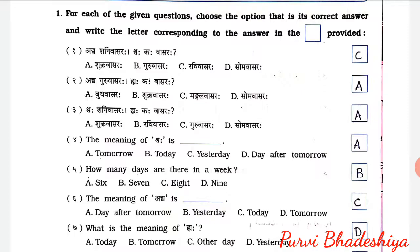1. Adhyah Shani Vasaraha. Swaha Kaha Vasaraha? Answer is C. Ravi Vasaraha. 2. Adhya Guru Vasaraha. Hiya Kaha Vasaraha? Answer is A. Budha Vasaraha. 3. Swaha Sani Vasaraha. Hiya Kaha Vasaraha? Answer is A. Sukhra Vasaraha.